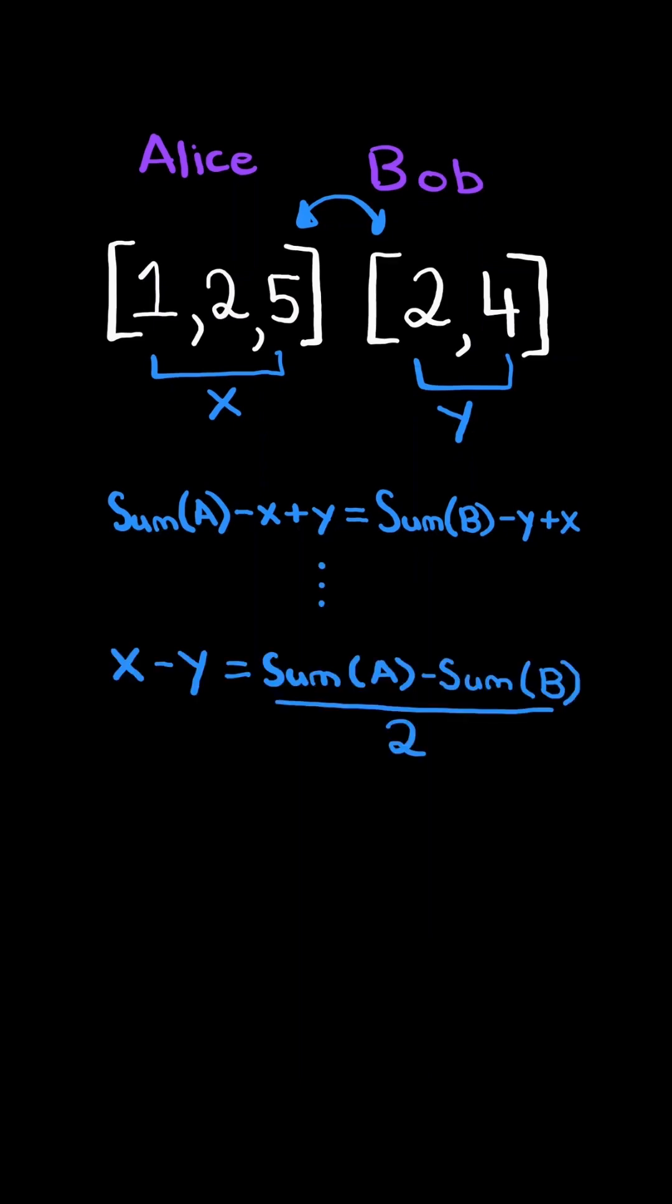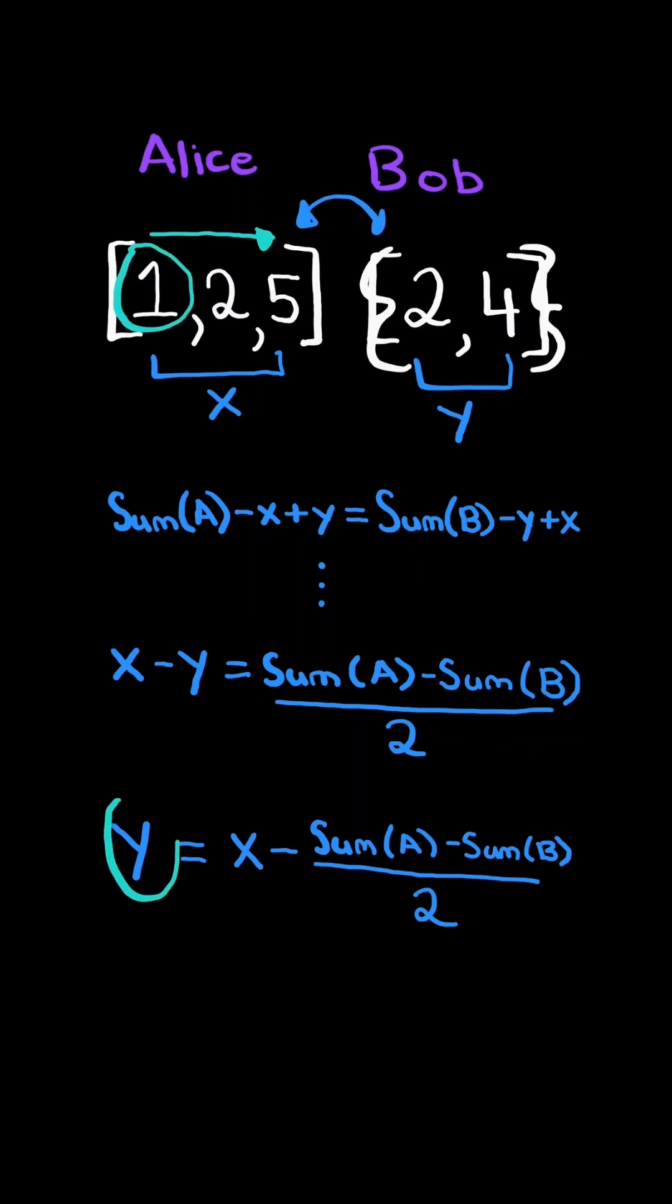Simplifying this equation and solving for X and Y, we get the following. And solving for Y, we get the following equation. So all we need to do now is convert Bob's list into a set. We can then iterate through Alice's list. We can fix X and calculate Y.